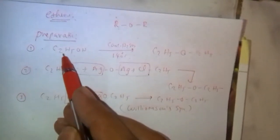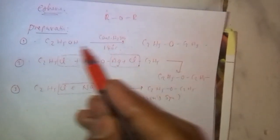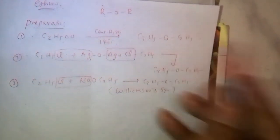Preparation. When ethyl alcohol reacts with concentrated H2SO4 at 140 degrees centigrade, 2 moles of ethyl alcohol react. By dehydration, it forms diethyl ether.